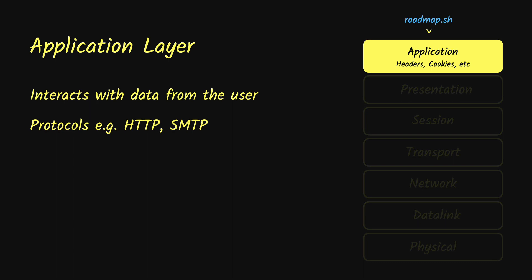The application layer is just the stuff that our application relies on to make the data presentable — for example, the HTTP protocol, the headers, the cookies. These are part of the application layer, but not the application itself. The protocols that normally operate at the application layer are HTTP, FTP, SMTP, and so on.